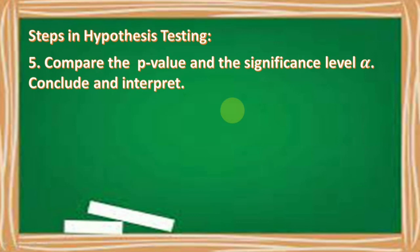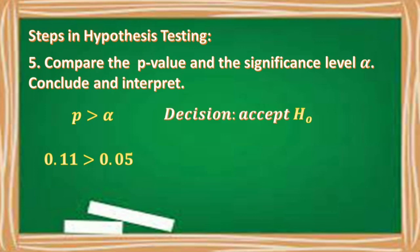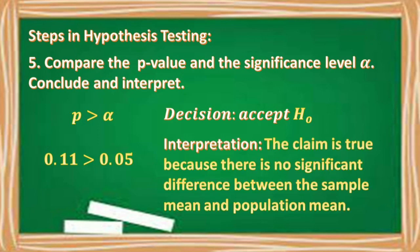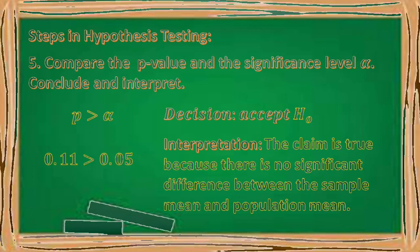Number five, compare the p-value and the significance level or alpha, then conclude and interpret. P is greater than alpha because 0.11 is greater than 0.05, so our decision is to accept the null hypothesis. The interpretation is the claim is true because there is no significant difference between the sample mean and the population mean.